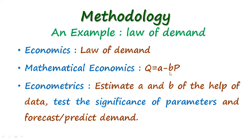Then comes the role of econometrics. Econometrics basically aims at estimating the values of a and b with the help of data. The next role of econometrics is to test whether the estimated values are statistically significant or not, utilizing different hypothesis tests for that purpose. The third role of econometrics is to predict the value of quantity demanded with the help of price.